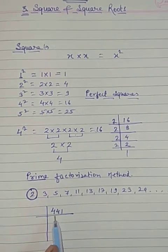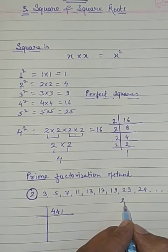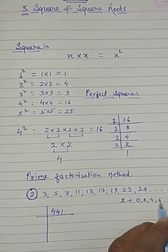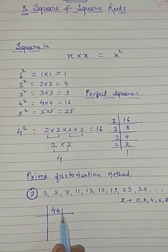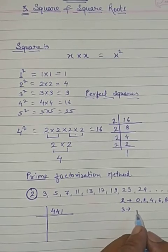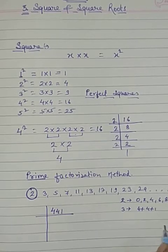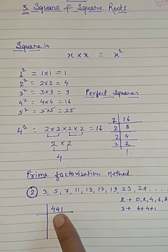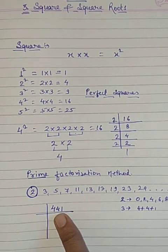Now let's look at divisibility rules. If we know the divisibility of 2: if the unit digit of a number is 0, 2, 4, 6, or 8, then the number is completely divisible by 2. If not, let's check divisibility by 3: if the sum of all digits is divisible by 3, then the number is divisible by 3.